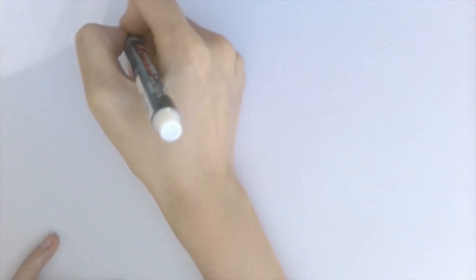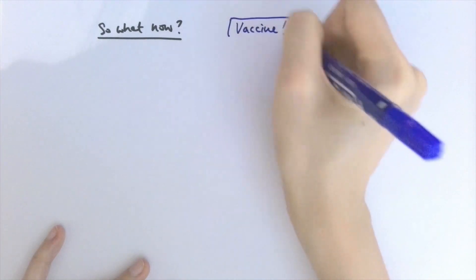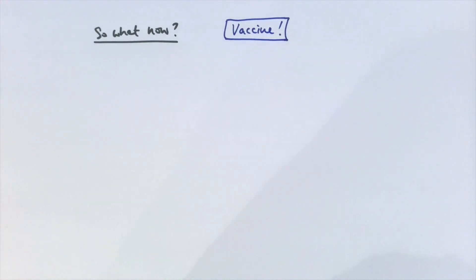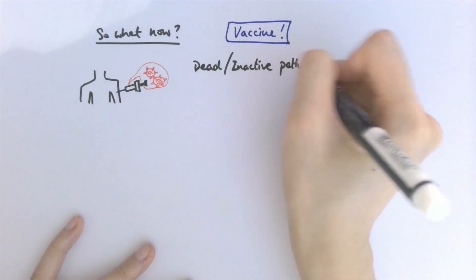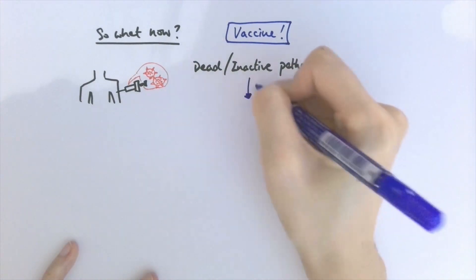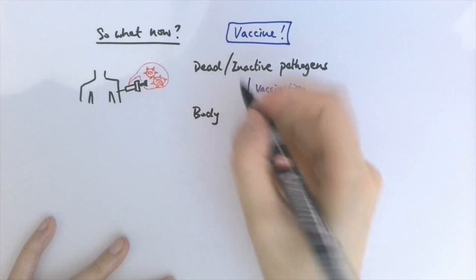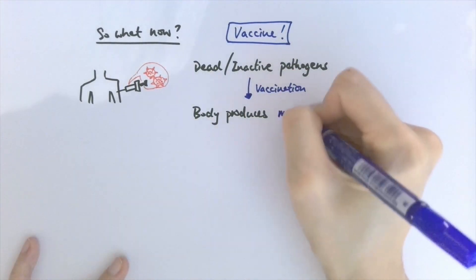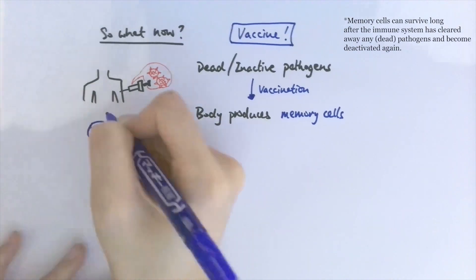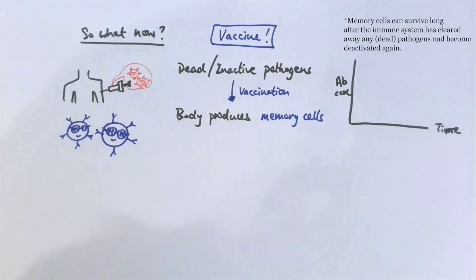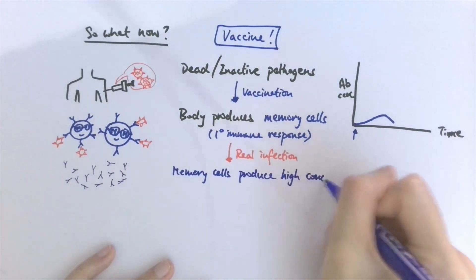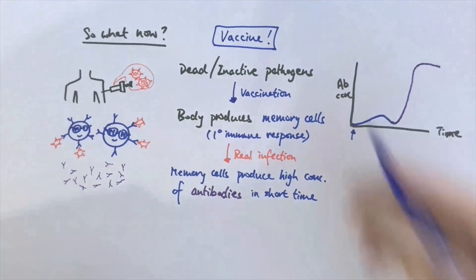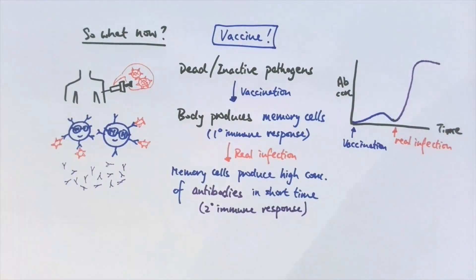So what's going to happen now? As you've seen on the news, there has been much talk of developing a successful vaccine for COVID-19, and indeed that is the best hope for dealing with this virus. Vaccines are dead or inactive pathogens injected into our body to trigger a primary immune response without making us ill. The key goal is to make our immune system produce memory cells which survive long after the pathogen has been killed. These memory cells will recognize the actual live pathogen when it invades our body, and can quickly induce a secondary immune response, producing large concentrations of antibodies in a short time to kill the pathogens before they cause symptoms.